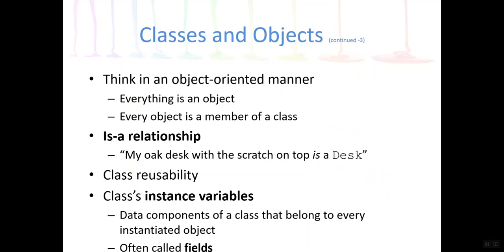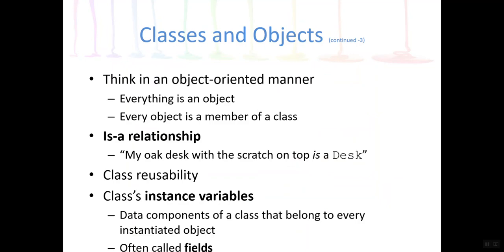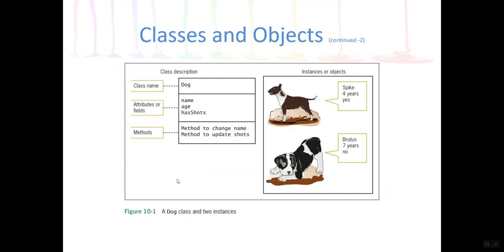Now each class, when you define those attributes, let's go back here for a second to our definition, we have attributes: name, age, and has shot. Those are also called instance variables when every object of that type has their own value. These are often called fields. So what I mean by that is, even though class dog has a name, and both Spike and Brutus have a name, if you notice their value for their name, of course, is different. So what that means is every object has a copy of its own variable. So they each have a variable called name and a variable called age and a variable called has shots.